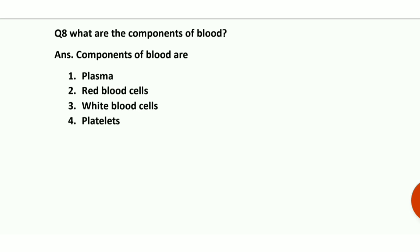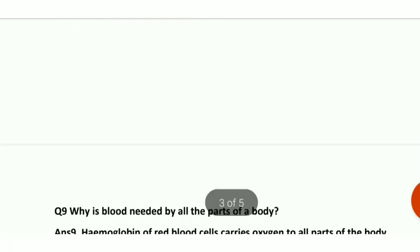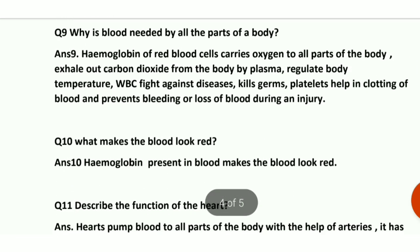Question number 8: what are the components of blood? The components of blood are: plasma, red blood cells, white blood cells, and platelets. Red blood cells, white blood cells, and platelets are all suspended in plasma. Plasma is the fluid, watery substance of blood. You need to remember these components.